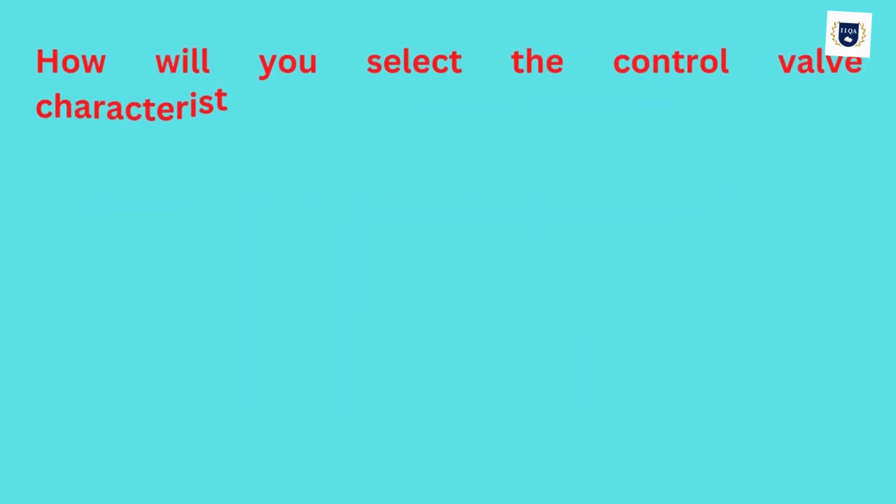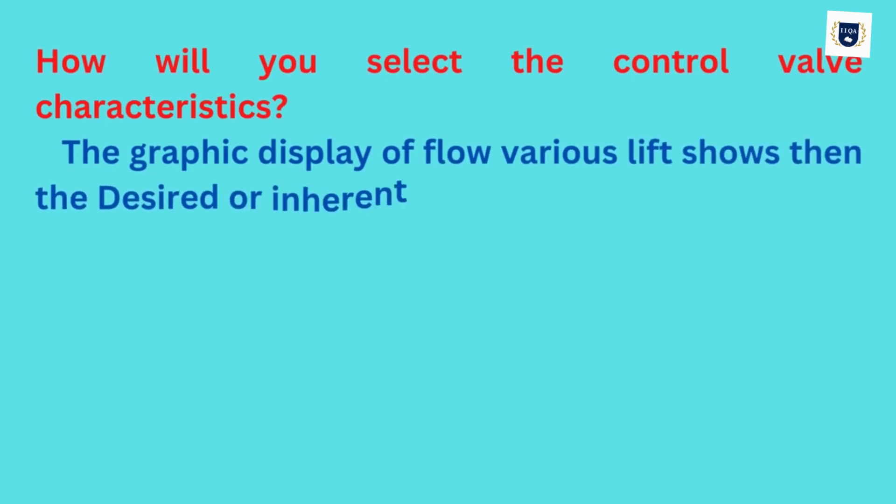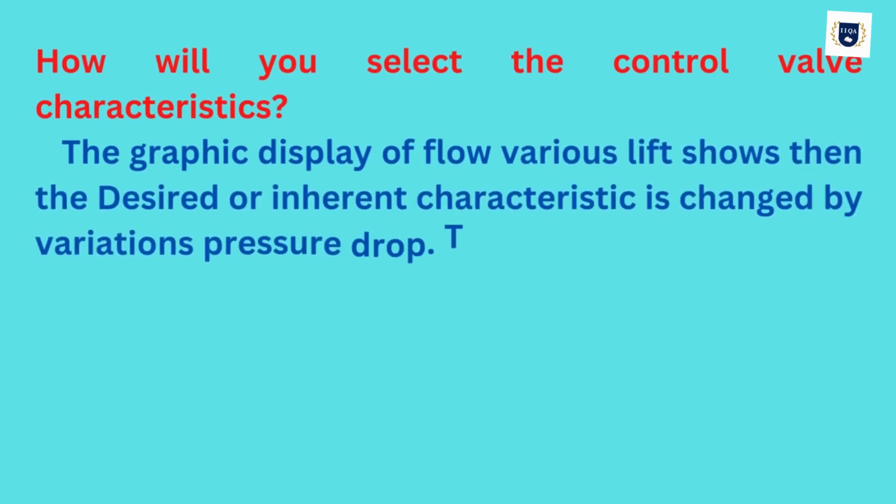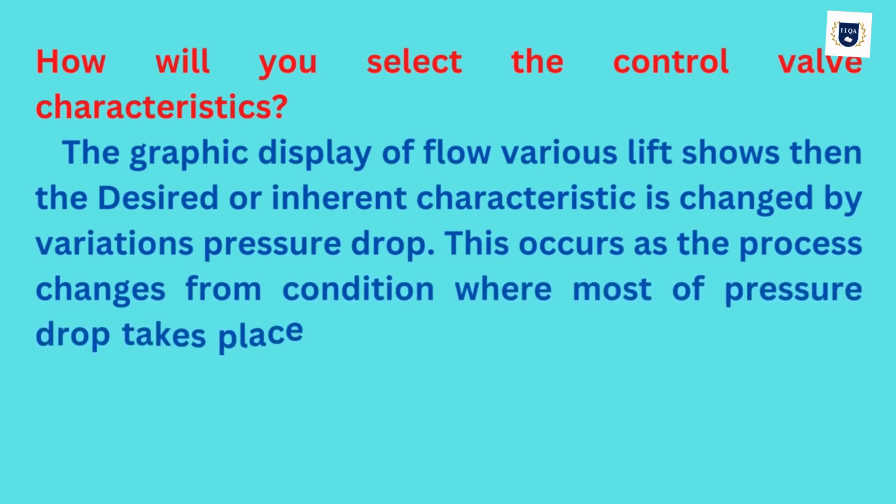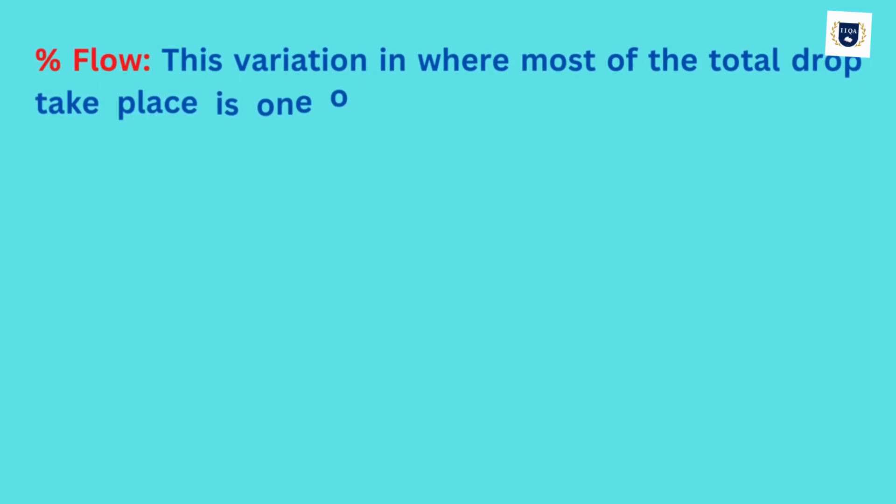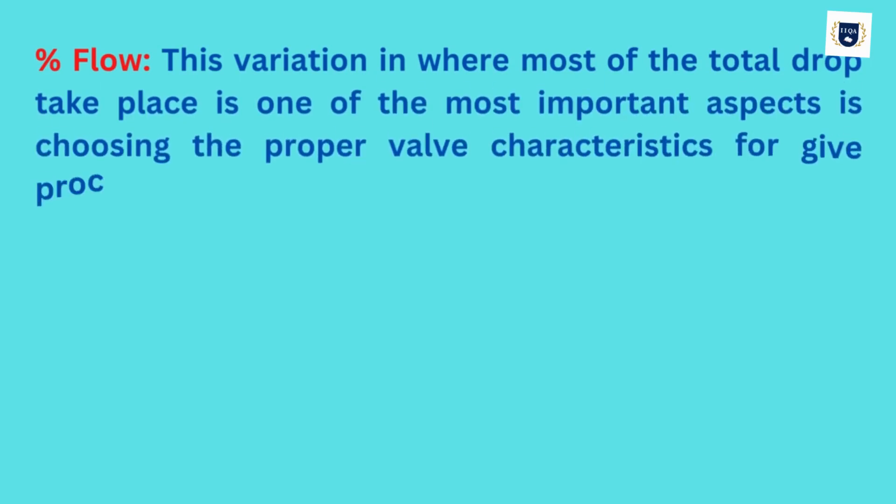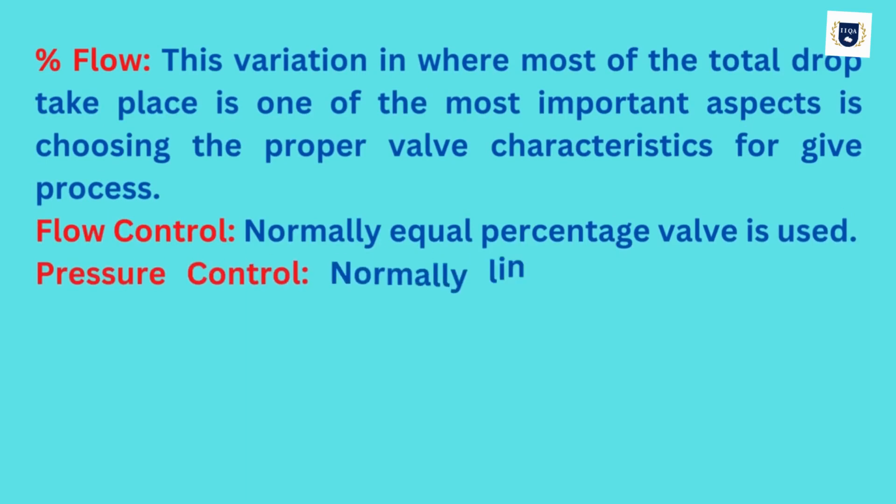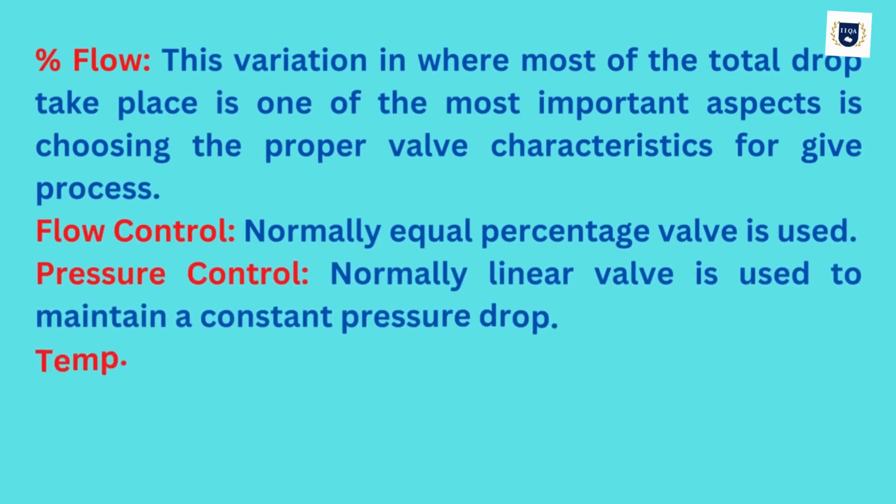How will you select the control valve characteristics? The graphic display of flow versus lift shows that the desired or inherent characteristic is changed by variations in pressure drop. This occurs as the process changes from a condition where most of the pressure drop takes place at the control valve to a condition where most of the pressure drop is generally distributed through the rest of the system. This variation in where most of the total drop takes place is one of the most important aspects in choosing the proper valve characteristics for a given process.